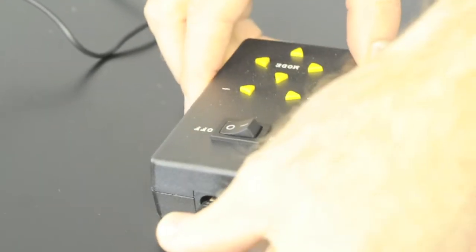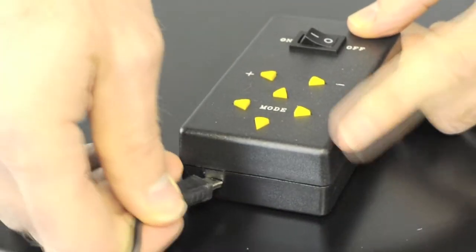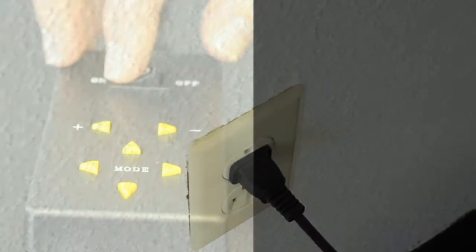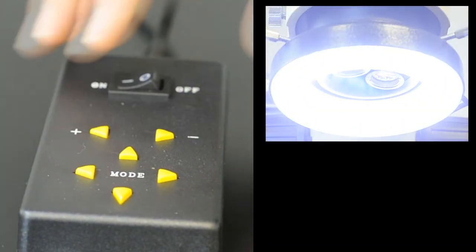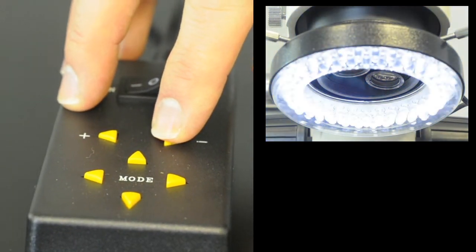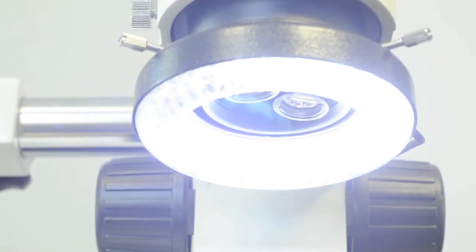The supplied power module offers a number of unique adjustments. The intensity can be adjusted in a series of steps and each of the four quadrants of the ring can be independently enabled or disabled to help with the reduction of glare in certain circumstances.